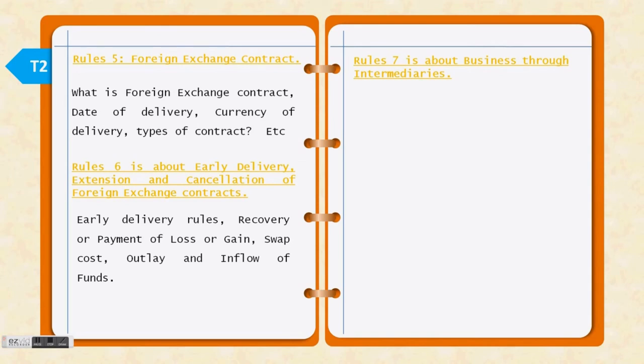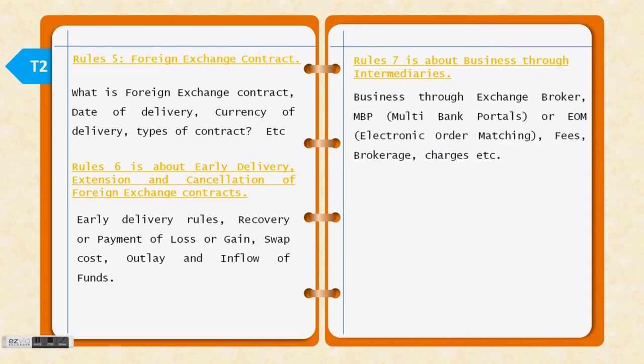Rule number 6 is about early delivery, extension, and cancellation of foreign exchange contracts. Rule number 7 is about business through intermediaries — authorized dealers should do business directly, not through intermediaries. When they do use intermediaries, there are specific guidelines. The main intermediaries in the foreign exchange market are exchange brokers, multibank portals, and EOM (Electronic Order Matching) systems.